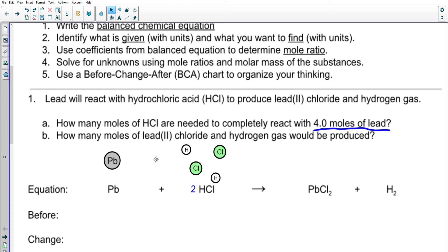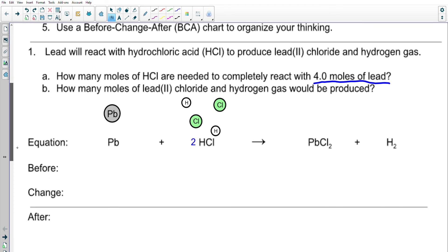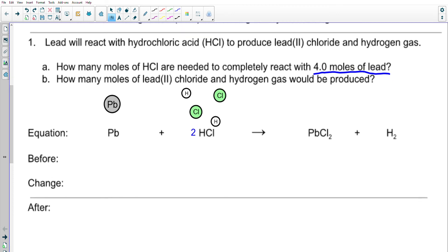I'm going to use a BCA chart here. A BCA chart takes account for what's present before the reaction happens, the change that occurs when the reaction happens, and then what's left afterward. Because I was given four moles of lead in the problem, I'll write that in as my given, and then I need to use the mole ratio to think about how many moles of HCl that would require.